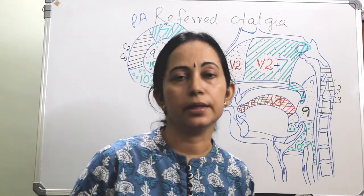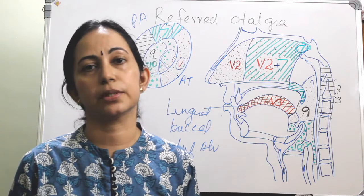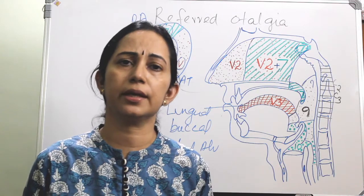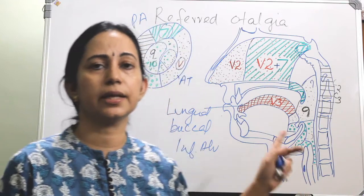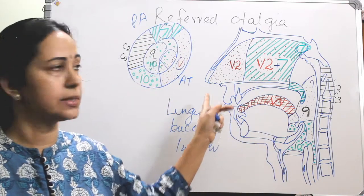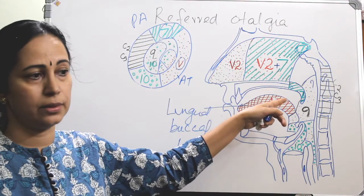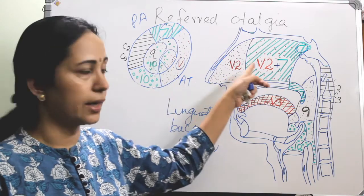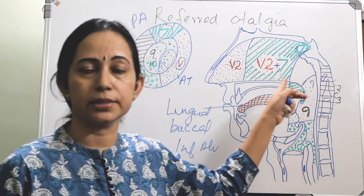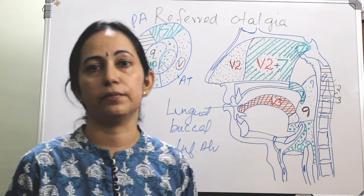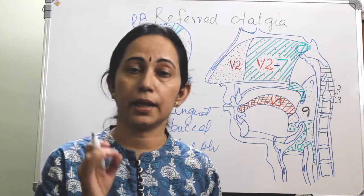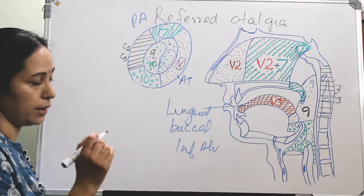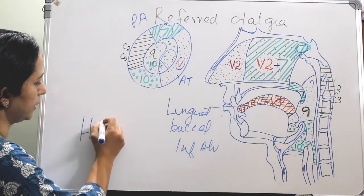The referred otalgia in the case of the facial — seventh nerve — is an important clinical concept. Another important thing which can be asked in MCQs is the Hitzelberger sign. Hyposthesia of the posterior superior part of the external auditory canal, which is seen in acoustic neuroma, is called the Hitzelberger sign.